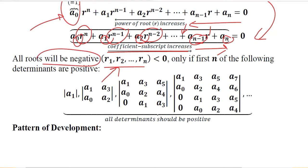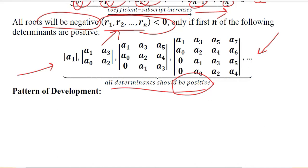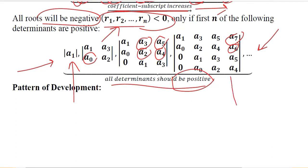If all the roots are negative and therefore desirable, all of the determinants will be positive. In other words, if all roots are desirable, all determinants should be positive. These determinants are formed using all the coefficients — A1, A2, A3, A4, A5, up to A6 and A7 — extracted from the left-hand side of the characteristic equation. We simply extract the values and plug them into the determinants, then check their positivity. If all are positive, we have a convergent time path.